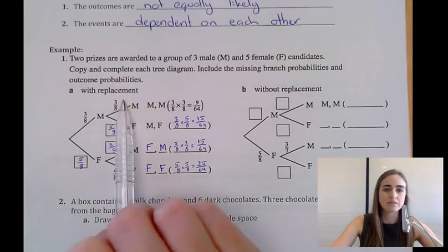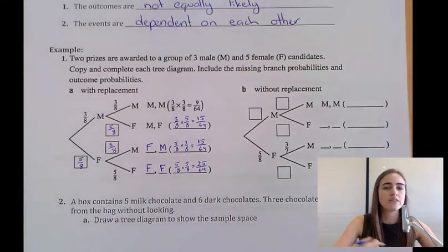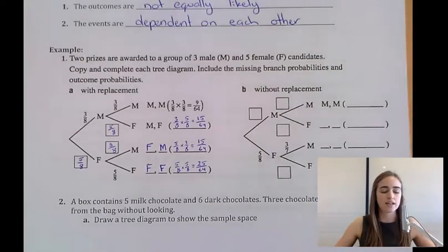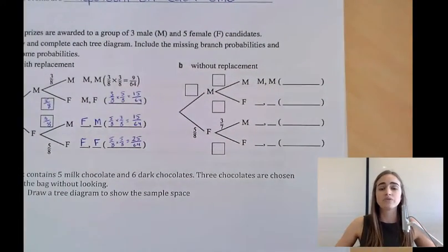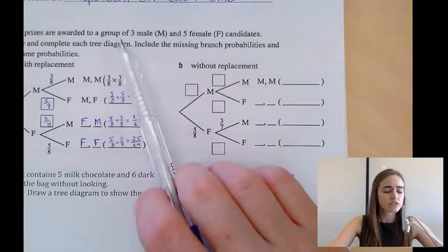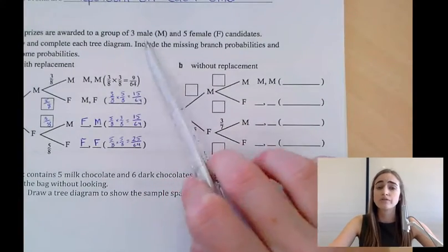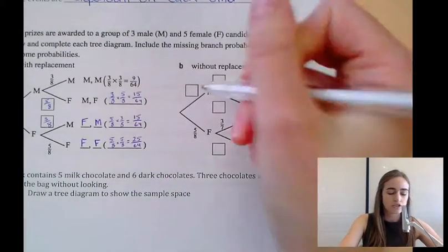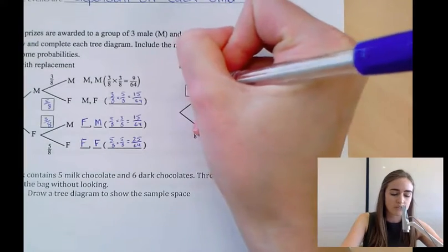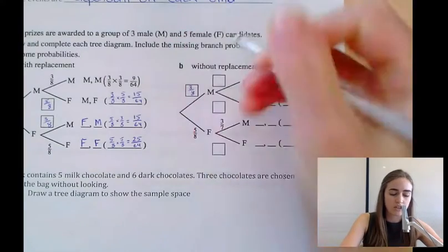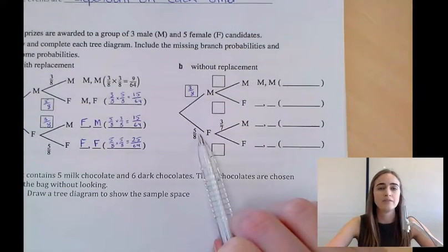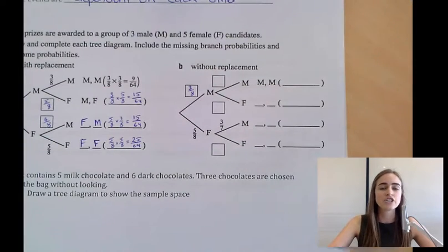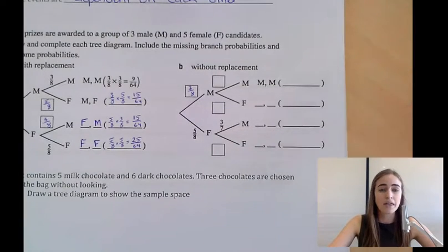That's with replacement, where the same person can win a second prize. Now for without replacement: we still start with 3 males and 5 females, so the first stage probabilities are still 3/8 and 5/8. But in the second stage, the same person can't win again, so there are only 7 people left to choose from.